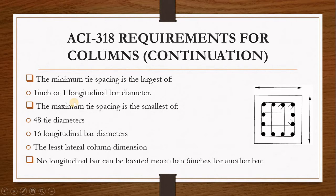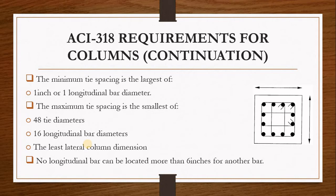ACI states that the maximum tie spacing is the smallest of three values: 48 tie diameters, 16 longitudinal bar diameters, or the least lateral column dimension. The least lateral column dimension applies especially to rectangular columns, since square columns have equal dimensions and circular columns have a single diameter.